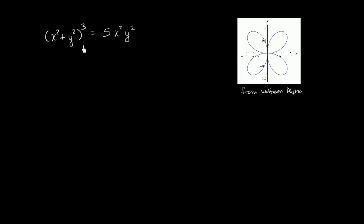Once again, I have some crazy relationship between x and y. Just to get a sense of what this might look like, if you plot all the x's and y's that satisfy this relationship, you get this nice little clover pattern — I plotted this off of Wolfram Alpha. What I'm curious about in this video is to figure out the rate at which y is changing with respect to x, and we're going to have to do it implicitly.